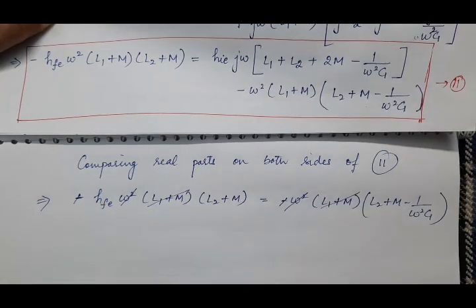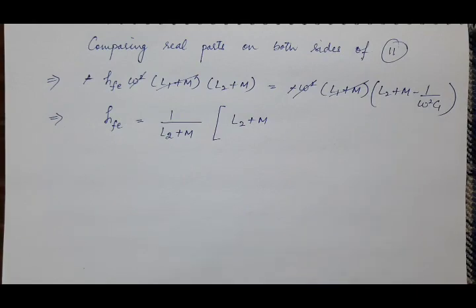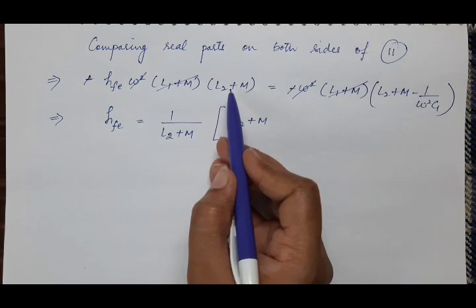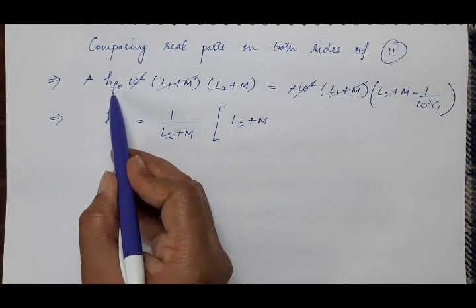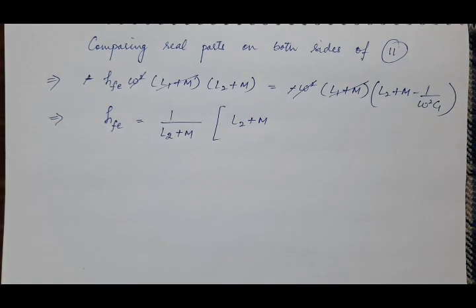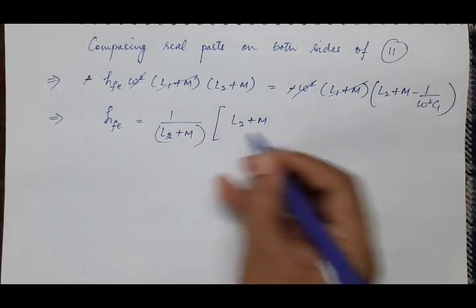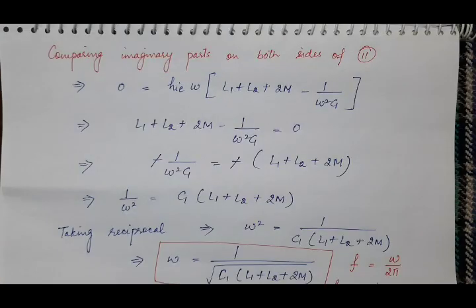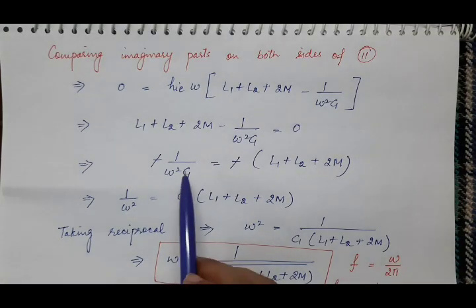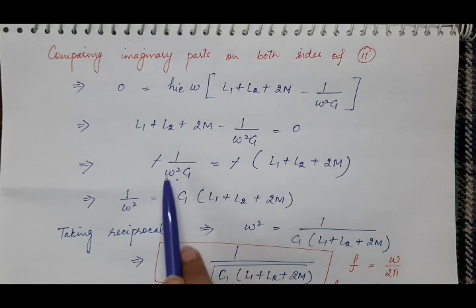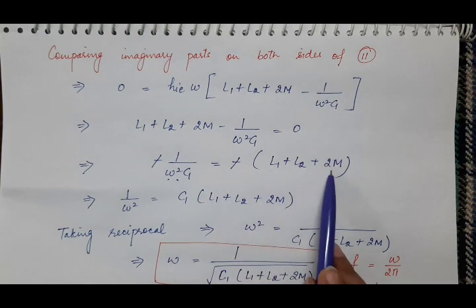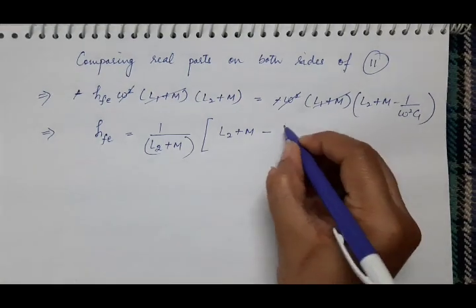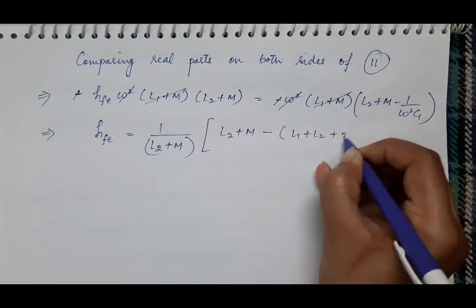After cancellation, move (L2+M) to the other side — it was multiplied, so on the other side it divides. We now have hfe = (L2+M − 1/(ω²C1))·... and substitute the value of 1/(ω²C1) = L1 + L2 + 2M (found from comparing imaginary parts) into the equation. So 1/(ω²C1) is replaced by L1 + L2 + 2M.